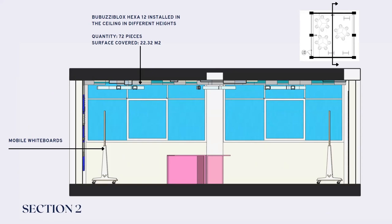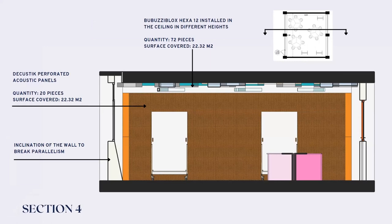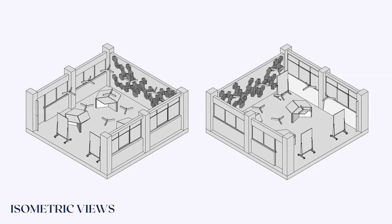Here is another section where we can also see the panels on the ceiling, as well as the lamps we proposed. We also decided to change the whiteboards to mobile whiteboards so it could be more dynamic and the classroom wouldn't be boring. The wall closest to the door features acoustic perforated panels that my teammate mentioned. We used 20 pieces in total. In this way, the reverberation would be lesser than before the intervention.